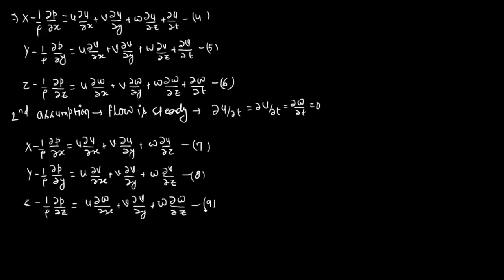Up to this point we have two assumptions: fluid is ideal (no viscosity) and flow is steady (no variation of flow parameters with time). Checking units: all three equations (7, 8, 9) have units of m/s², since X is gravitational acceleration per unit mass — this is force per unit mass, which equals acceleration.